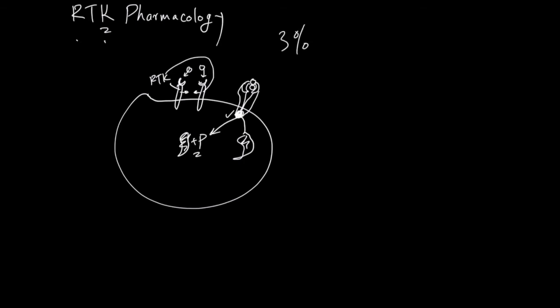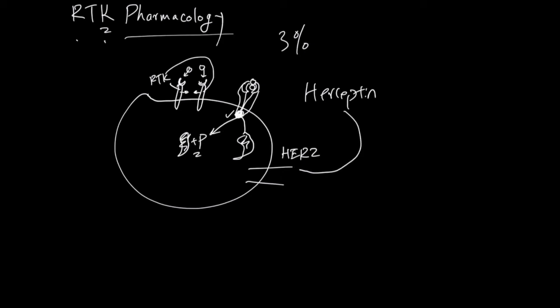Three percent of all current pharmacological ligands target RTKs. The first example is Herceptin. Herceptin targets the RTK called HER2 and can bind to its ligand-binding site, stopping HER2 from being active. HER2 is an RTK overexpressed in a subtype of breast cancer.